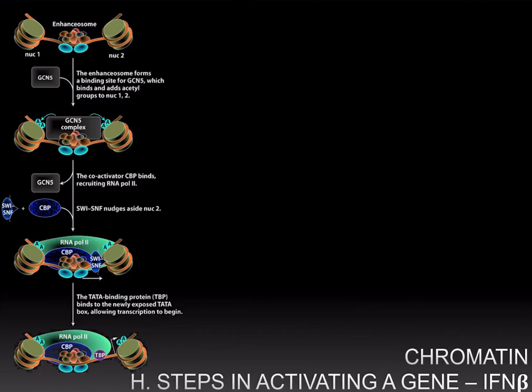Therefore, the activation of a gene is initiated by the binding of transcription factors, which recruit chromatin remodeling enzymes to move nucleosomes aside and make the DNA accessible, so that general transcription factors like TBP can bind and the RNA polymerase holoenzyme complex can assemble at the promoter to begin transcription.